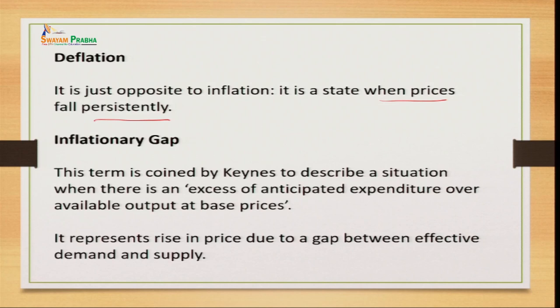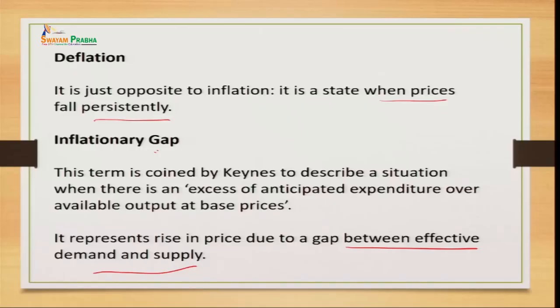The inflationary gap is the gap between effective demand and supply. When demand and supply are equal, we call it equilibrium. When demand is high and supply is less, the price of commodities goes up — if this continues, it is called an inflationary gap. Producers, the government, and consumers are trying to reduce that gap as much as possible to control it.